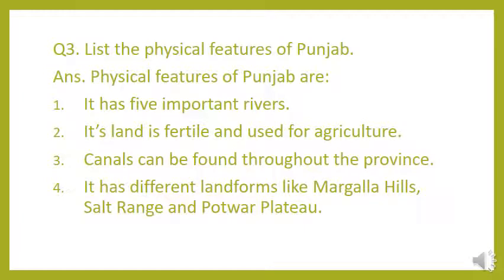Question number three: list the physical features of Punjab. Punjab has five important rivers — Ravi, Sutlej, Chenab, Jhelum, and Indus. You should remember these five rivers of Punjab. Number two: its land is fertile and used for agriculture. Punjab is mainly known for agriculture — most crops are grown there because the land is very fertile, meaning the growth of plants is very good.